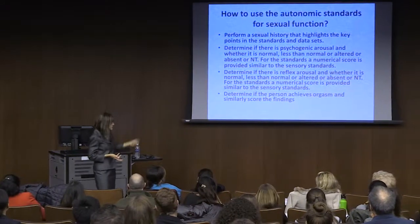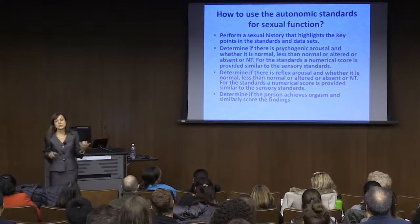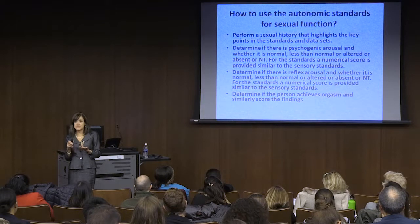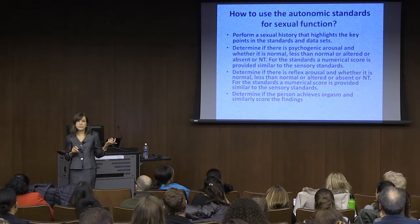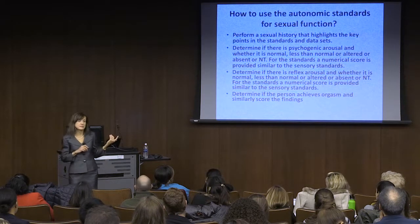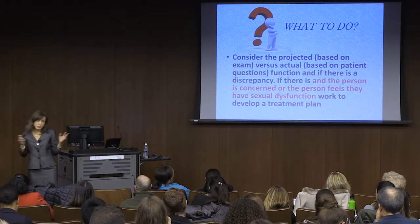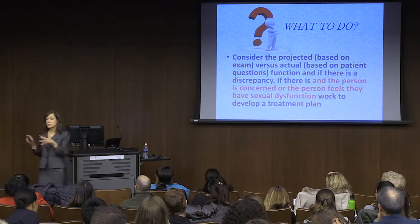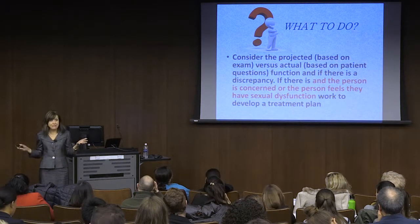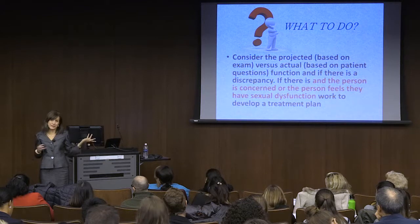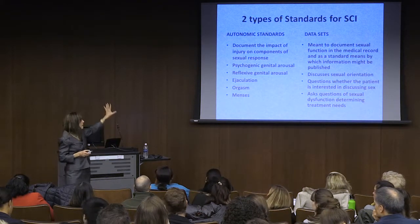You check anal sensation and the bulbocavernous reflex to see if the person has a reflex response. Then you use those findings to determine what you think should happen sexually. You complete the autonomic standards, looking at arousal—psychogenic and reflex—orgasms, ejaculation for men, and menses for women. Then you say: this is what Barbara has, but really Barbara should have this. If there's a difference and the person cares about it, then they have a problem. If they have a difference and they don't care about it, then there's not a problem.